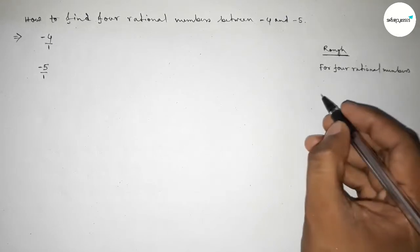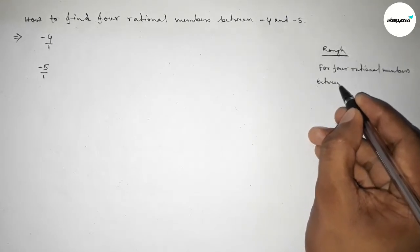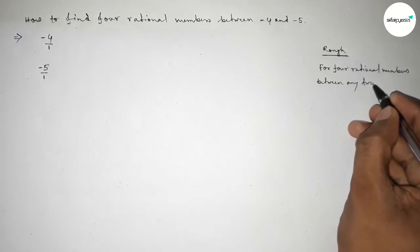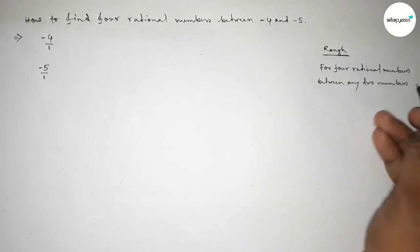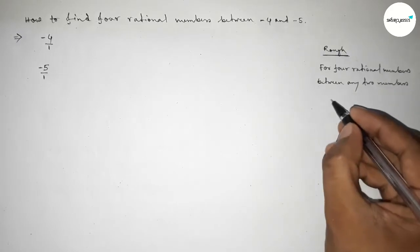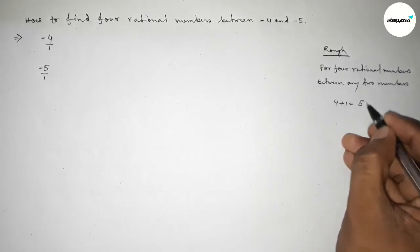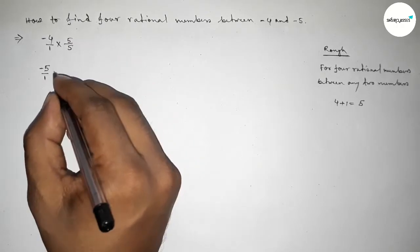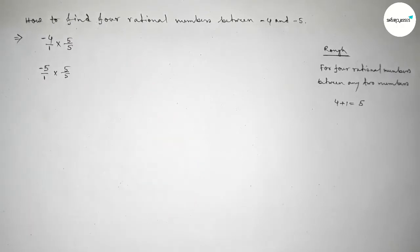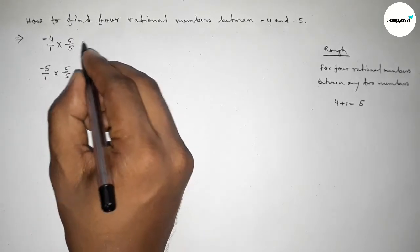So we should multiply both numbers by four plus one equals five. So multiplying both numbers by five by this way, okay?